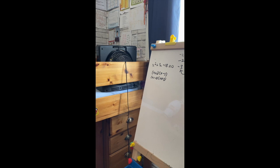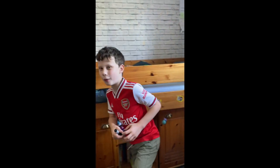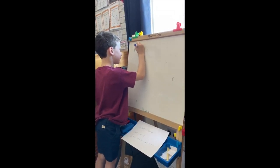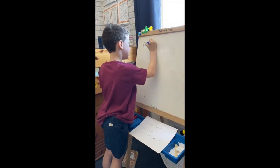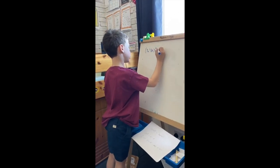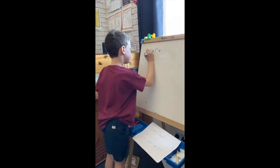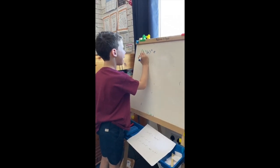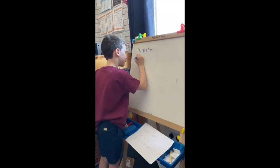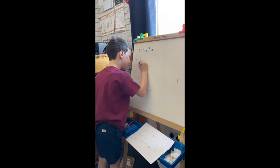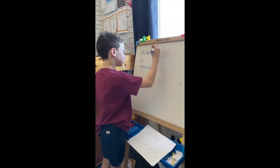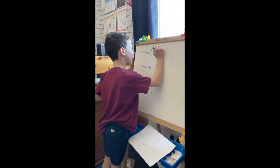Now we've got the hardest ones. What do you do first? Take this number at the beginning and raise it to the power of the number outside the bracket. So 3 to the power of 4 is 3 times 3 times 3 times 3, which equals 81. So we put 81 here.